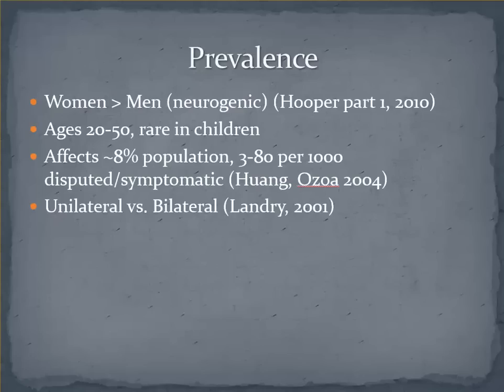The incidence of unilateral versus bilateral symptoms is not well established, but in a study by Landry of 153 patients undergoing surgery for TOS symptoms, 40% in the operative group noted bilateral symptoms, and 23% in the conservative group had bilateral symptoms. So unilateral symptoms may be a more common occurrence, but bilateral symptoms occur frequently as well.